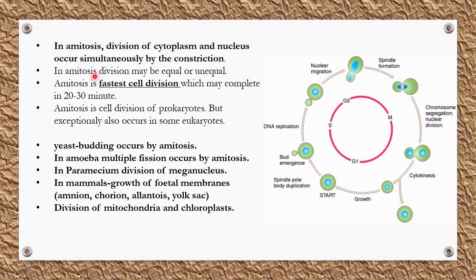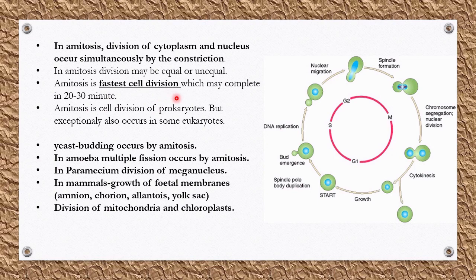In amitosis, division of cytoplasm and nucleus occur simultaneously due to constrictions. Division may be equal or unequal. Amitosis is the fastest cell division because there is no sequential method — cytoplasm and nucleus division both run simultaneously — and it may be completed within 20 to 30 minutes.